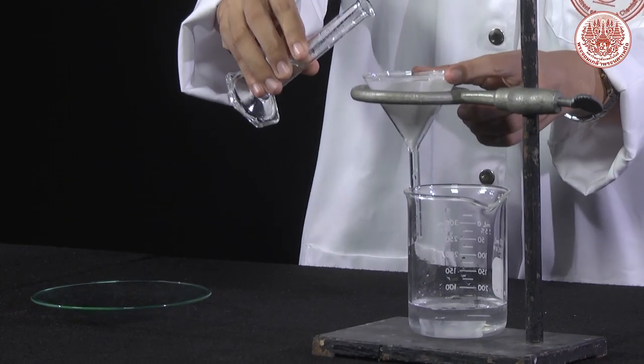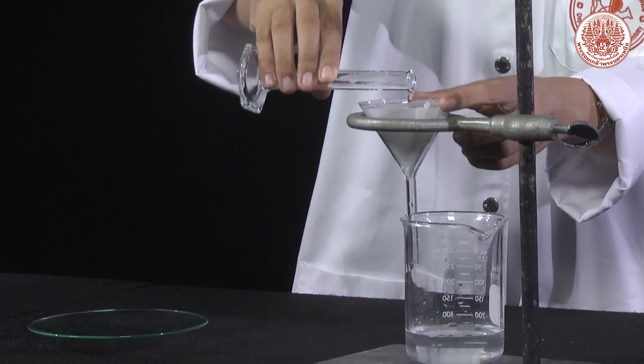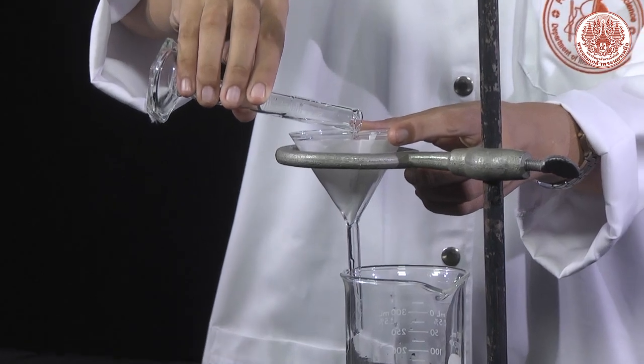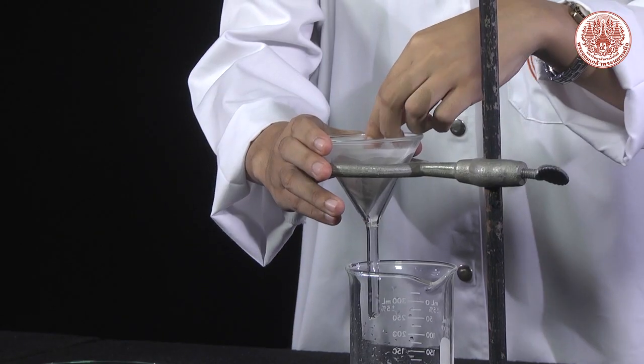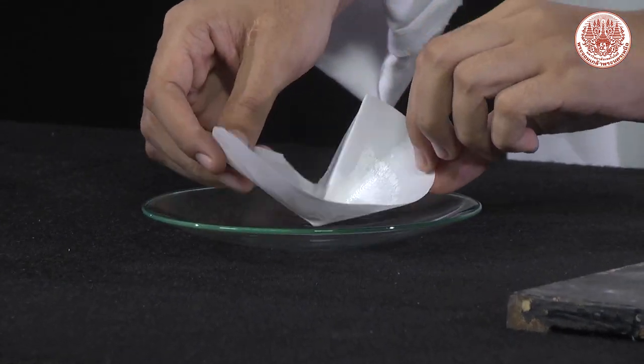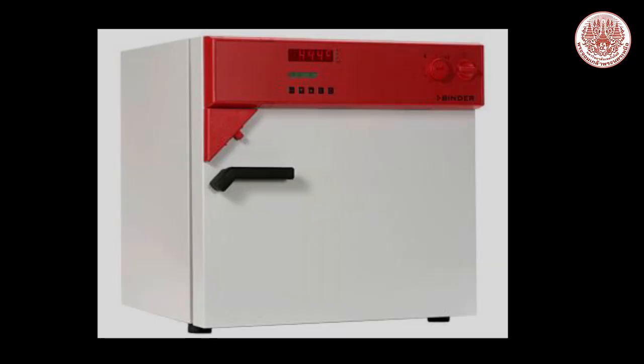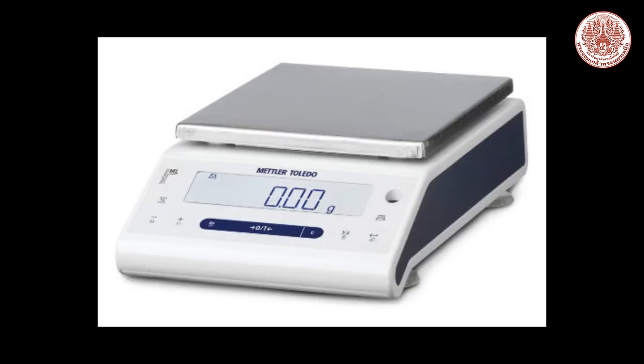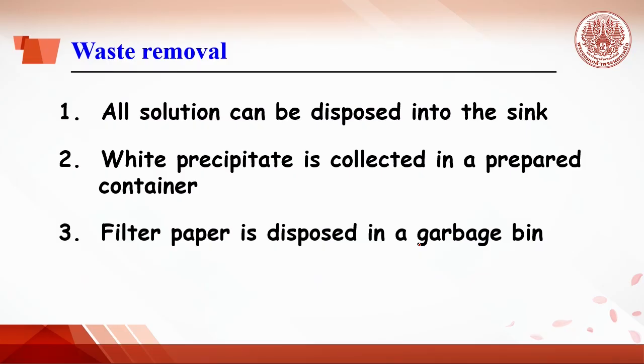When the liquid in the filter paper is dry, pour over white precipitate on the filter paper with 5 mL of acetone. After acetone is dry, move the filter paper with precipitate and place on the watch glass. Then put into the oven at 80 Celsius for 20 minutes. Let the precipitate cool down and weigh the precipitate with filter paper and watch glass. All the solution can be disposed into the sink, while precipitate is collected in a prepared container and filter paper disposed in the garbage bin.